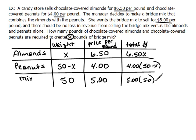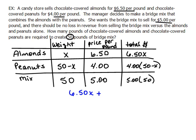Setting up the table, the last column gives us our equation — we're taking almonds, mixing with peanuts, to end up with the total mix. The money has to be the same whether you bought the almonds and peanuts alone or the mix together. So our equation is: $6.50 times X plus $4 times (50 minus X) equals $5 times 50.